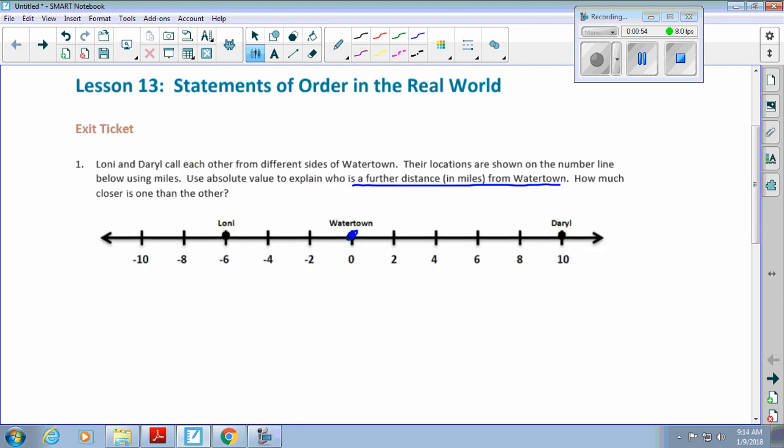Just like an ELA class where you have to make a claim and back it up with text evidence, in math you have to show what mathematical thinking you used to find that answer. On William's paper, he has the absolute value of 10 equals what? The absolute value of 10 is 10, right? Because absolute value means the distance from zero.